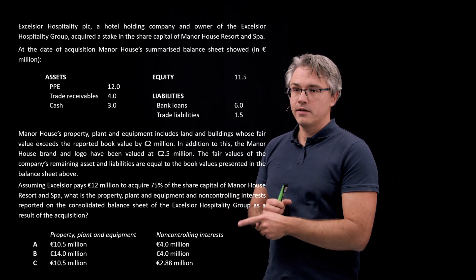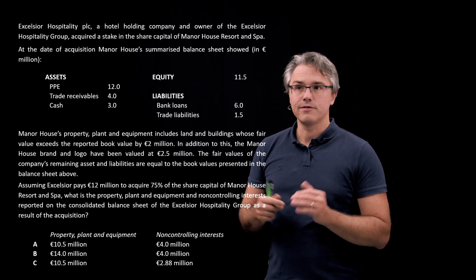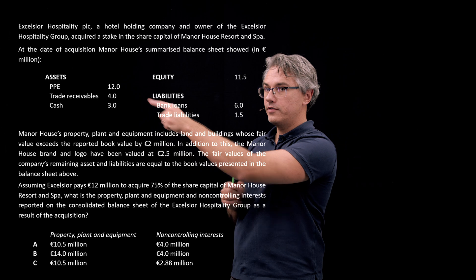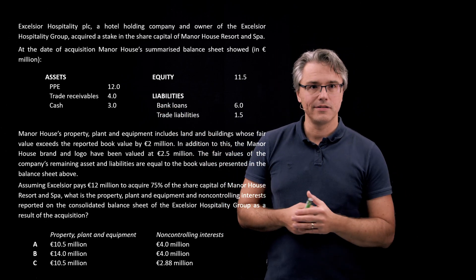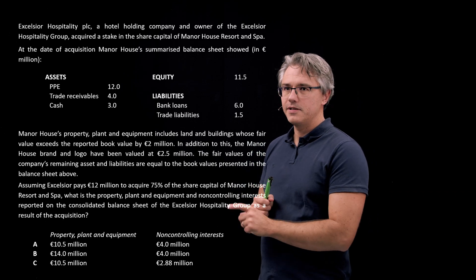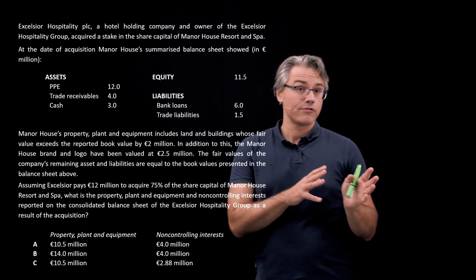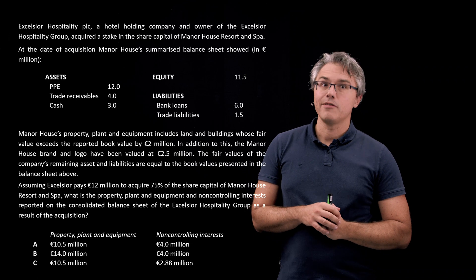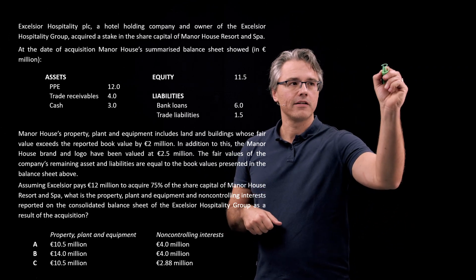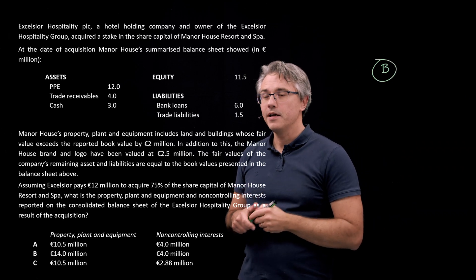So, definitely, property, plant and equipment should be carried at its full value, and that is whatever we had originally in the balance sheet of the target company, adjusted to fair value, which gives 14. That points to answer B, doesn't it? Now, the non-controlling interest, which we calculated, was equal to 4, and that once again confirms that the correct answer ought to be B.